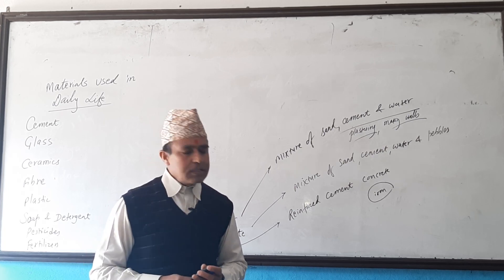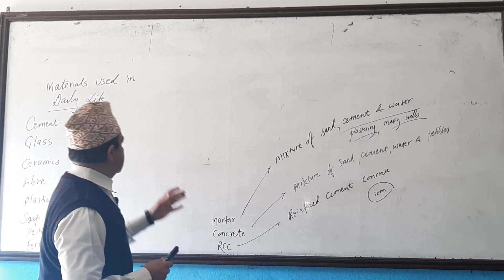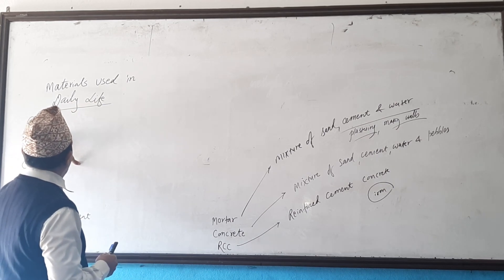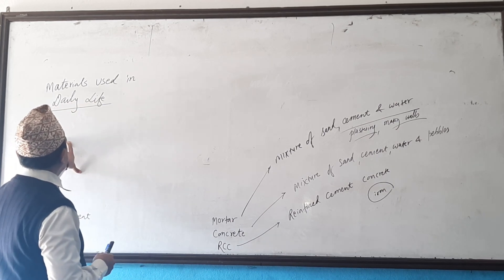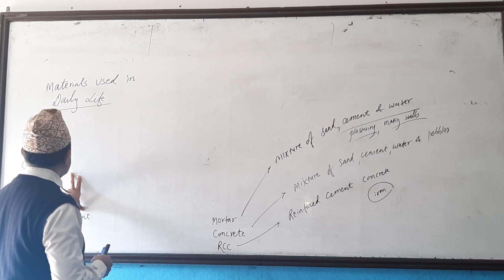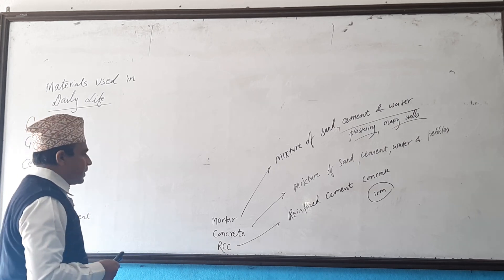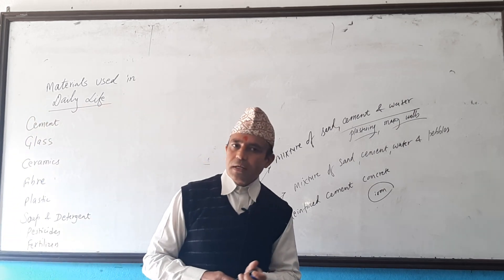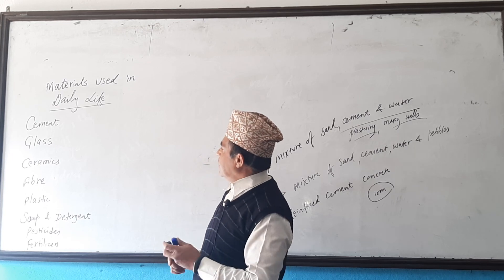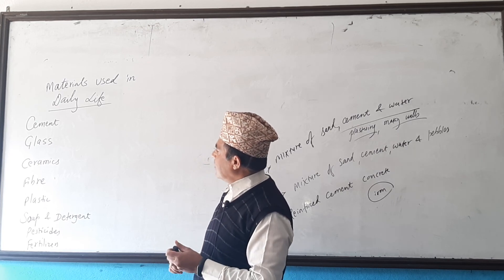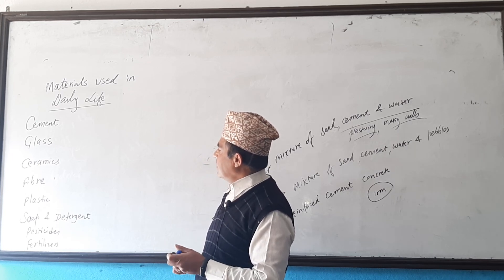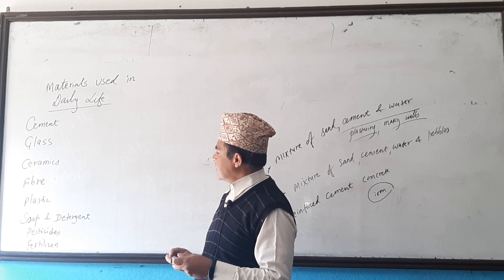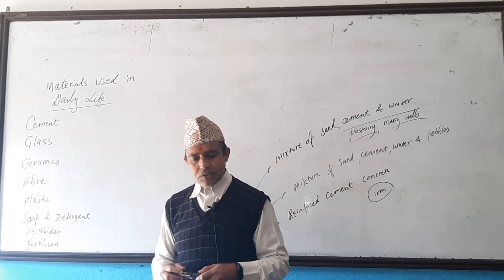So in today's class we discussed one material used in our daily life — cement. In the next class we will continue with the remaining materials: glass, ceramics, fiber, plastic, soap and detergent, pesticides, and fertilizers.